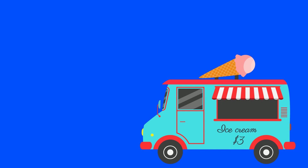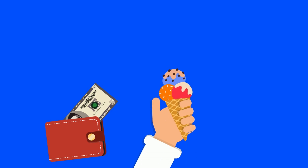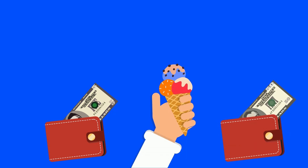Let's use buying ice cream to see how a transaction actually works — first with paper money, then digital money, then crypto. Let's start with paper money. Imagine you have five dollars in your wallet and the ice cream man has fifty dollars in his wallet.